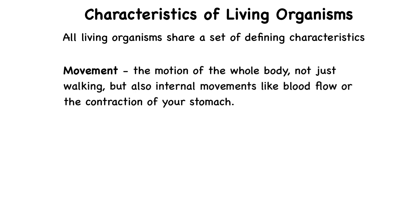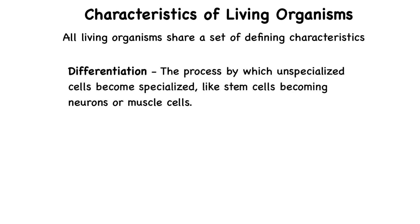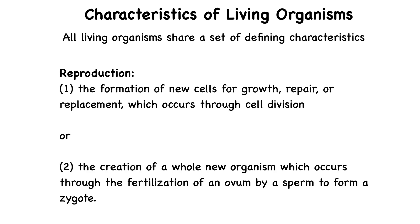Then there's movement, which is the motion of the whole body — not just walking, but also internal movements like blood flow or the contraction of your stomach. Then there's growth, which is an increase in body size resulting from an increase in size or number of existing cells, or both. Then there's differentiation — the process by which unspecialized cells become specialized, like stem cells becoming neurons or muscle cells. And finally, there's reproduction, which refers to: one, the formation of new cells for growth, repair, or replacement, which occurs through cell division; or two, the creation of a whole new organism, which occurs through the fertilization of an ovum by a sperm to form a zygote.